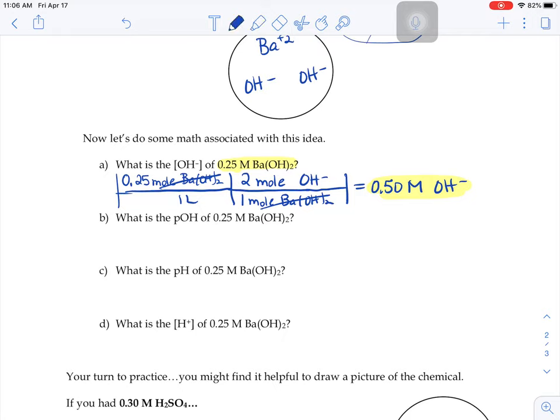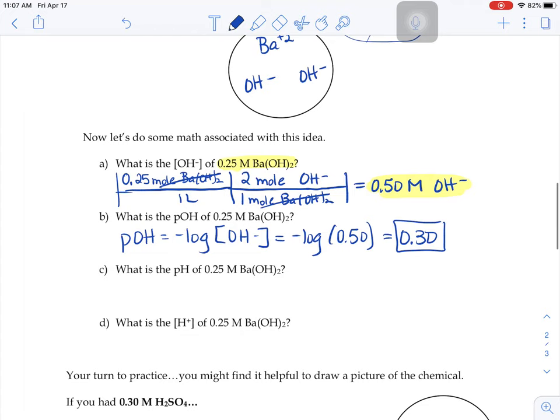This time, we want to know what's the pOH. So to get pOH, we need to do the negative log of the OH minus concentration. So we need to do the negative log of 0.5. You should get about 0.3 when you type that in your calculator.